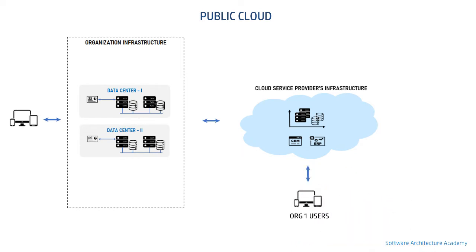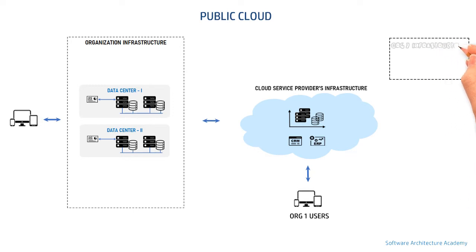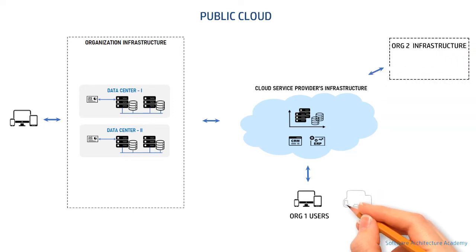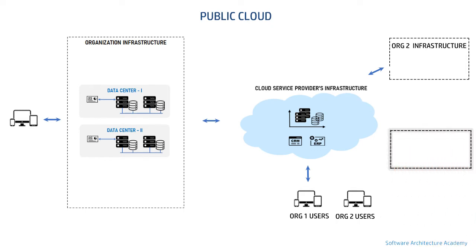In the public cloud model, infrastructure can be made available to and shared by multiple individuals and organizations, promoting multi-tenancy — servers are shared. This model is more cost-effective and was a very initial model that became hugely popular. However, for large organizations with data security, data privacy, jurisdiction, and other regulatory requirements, it still didn't solve their problems.